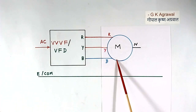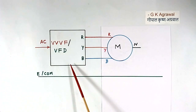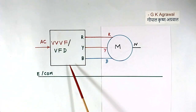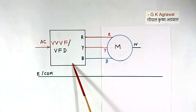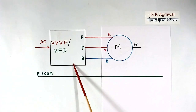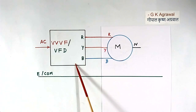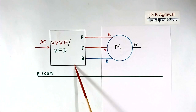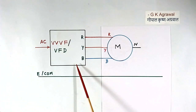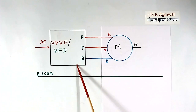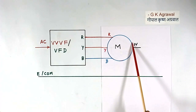What happens? When the system becomes very big and some problem occurs, it is very difficult to find out the location of the problem. So we monitor many points in the system, with a display and printer, to find out where the problem is and the nearby location of the fault. That is where neutral is useful.